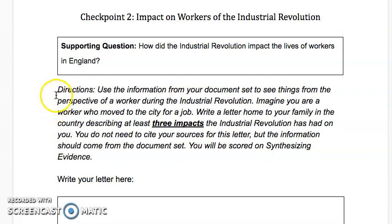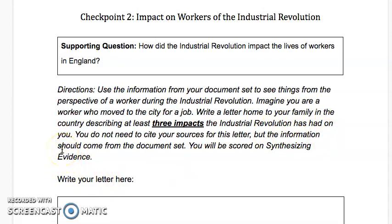Looking at the directions: use the information from your document set to see things from the perspective of a worker during the Industrial Revolution. Imagine you are a worker who moved to the city for a job. You're going to write a letter home to your family in the country describing at least three impacts the Industrial Revolution has had on you. You don't need to cite sources, but information should come from the document set, and you will be scored on synthesizing evidence — meaning putting information from several documents together to make one key point.